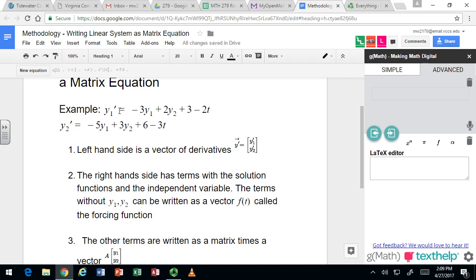Here we have an example, where we have y1' equals negative 3y1 plus 2y2 plus 3 minus 2t. And y2' equals negative 5y1 plus 3y2 plus 6 minus 3t.